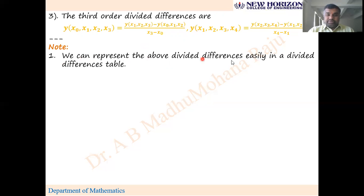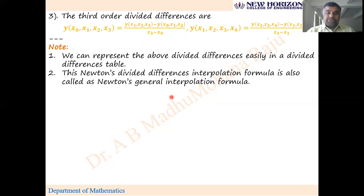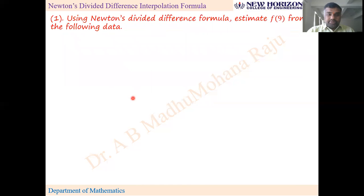We represent the divided differences easily in a divided differences table. This Newton's divided difference interpolation formula is also called Newton's general interpolation formula. It can be used not only for unequally spaced data but also for equally spaced data — unlike Newton's forward and backward formulas, this is a general formula usable for any type.